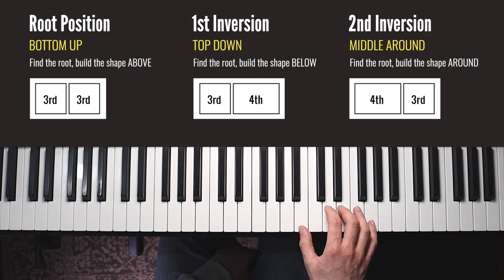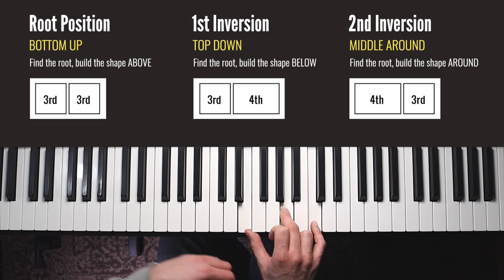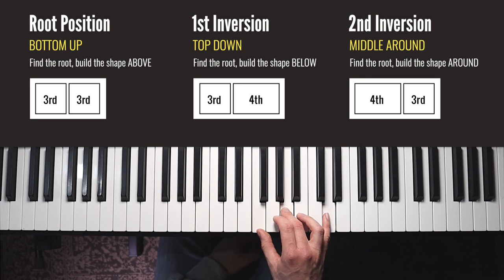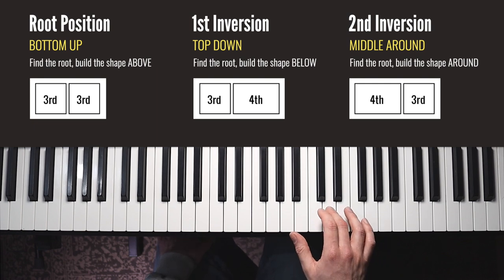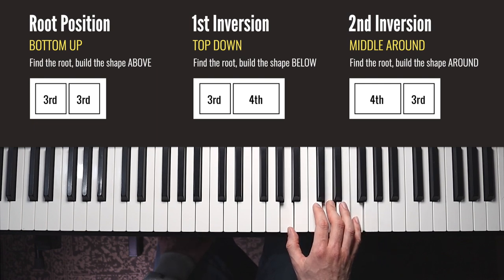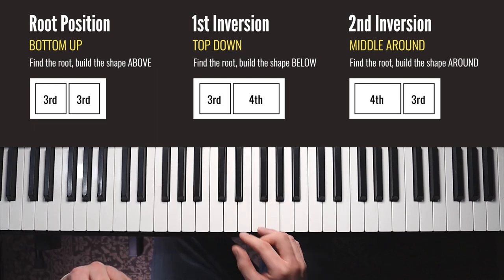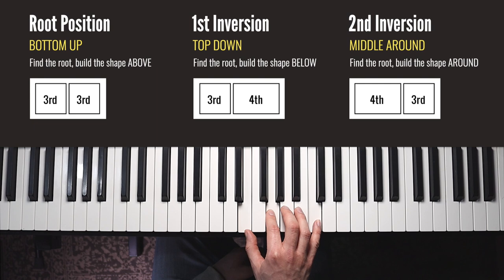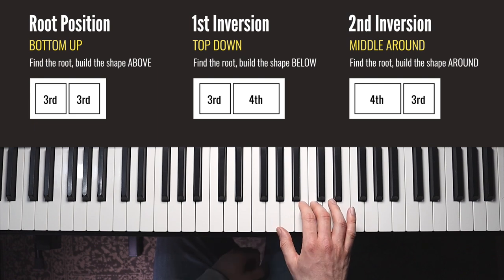Remember, don't play that note and then add the others — eye them up on your way down and actually play the chord all together. Pick another random note and find that same shape around. Your focus is getting this fourth here and that third there, without accidentally doing the opposite shape. Once you can do that comfortably starting from any note, then just like before, if someone wants you to play a specific chord — let's say D minor — you just target D first and build the shape around. So: root position is bottom-up, find the root and build above. First inversion is top-down, locate the root and build below. Second inversion is middle-around, locate the root and build the shape around.